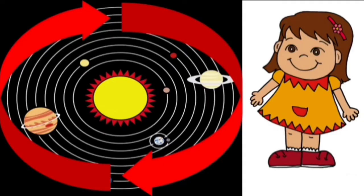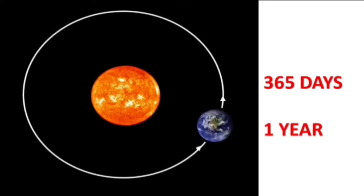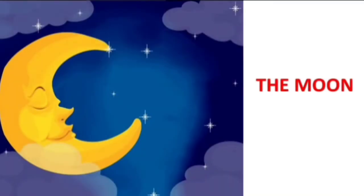And remember that Earth spins around the Sun. It takes one year for Earth to spin around the Sun.